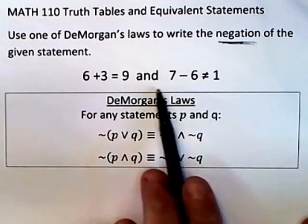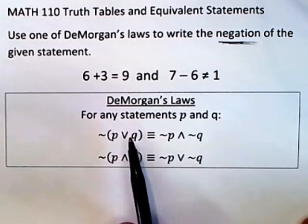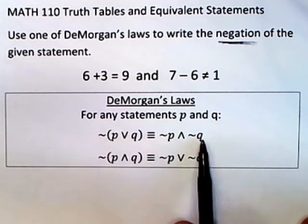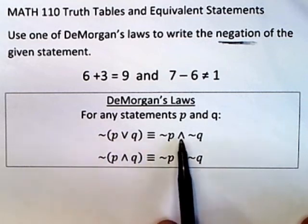Keep in mind that we do know what DeMorgan's Laws are. They tell you how to negate an OR and how to negate an AND. To negate an OR you negate the P and the Q and you flip the OR to an AND.